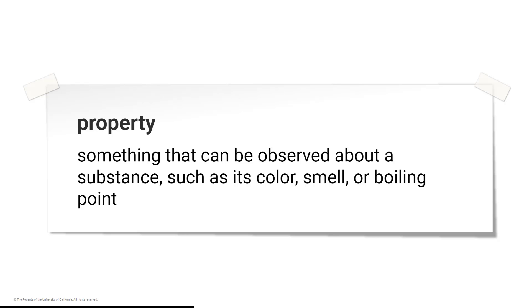Aside from the properties we can see, chemists also rely on properties that can only be observed under special conditions. These properties help chemists identify a substance and include boiling and melting point.